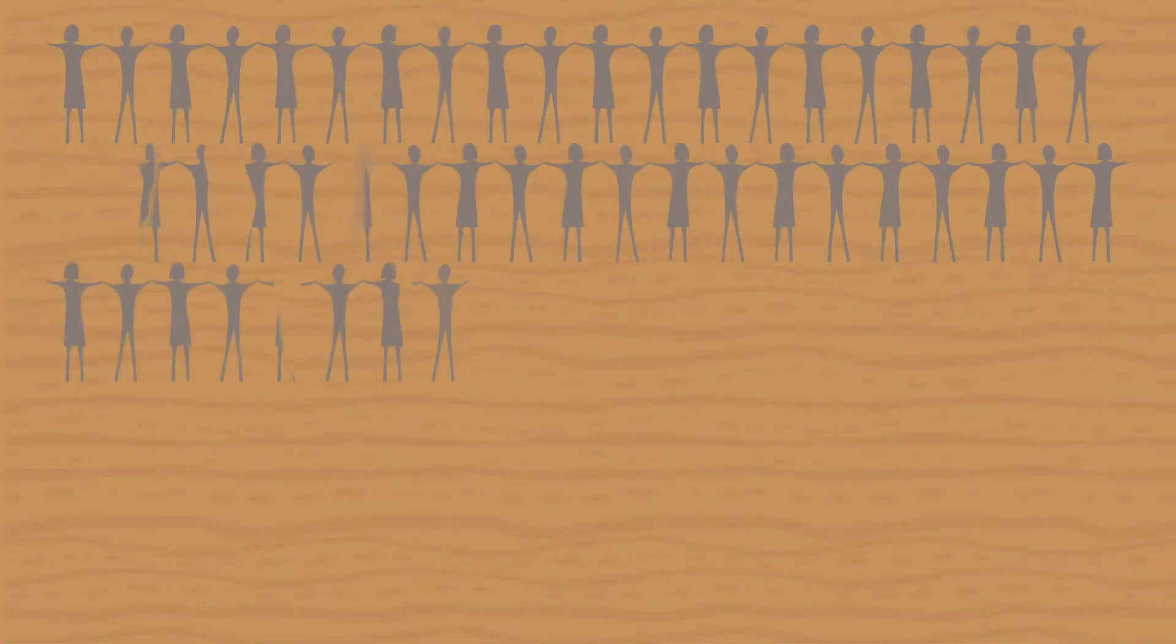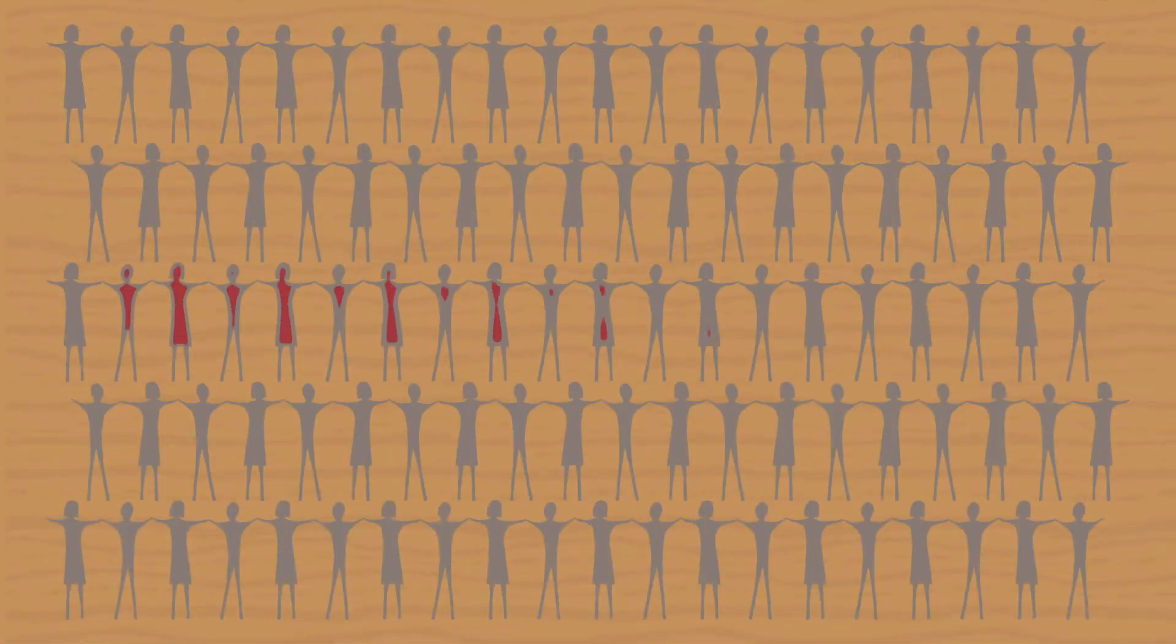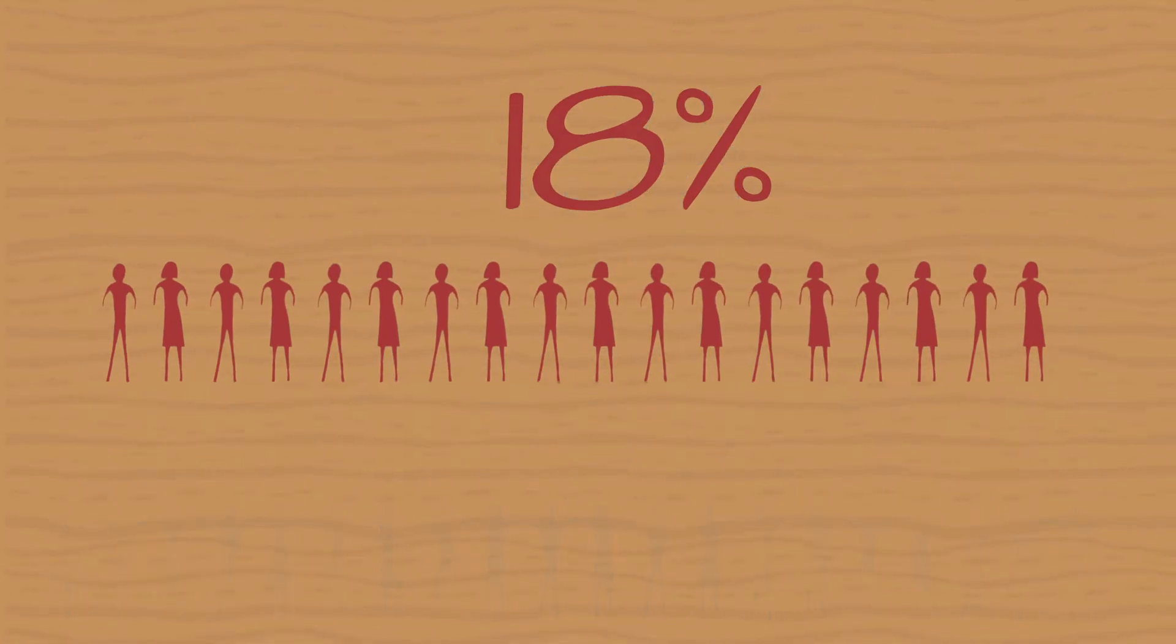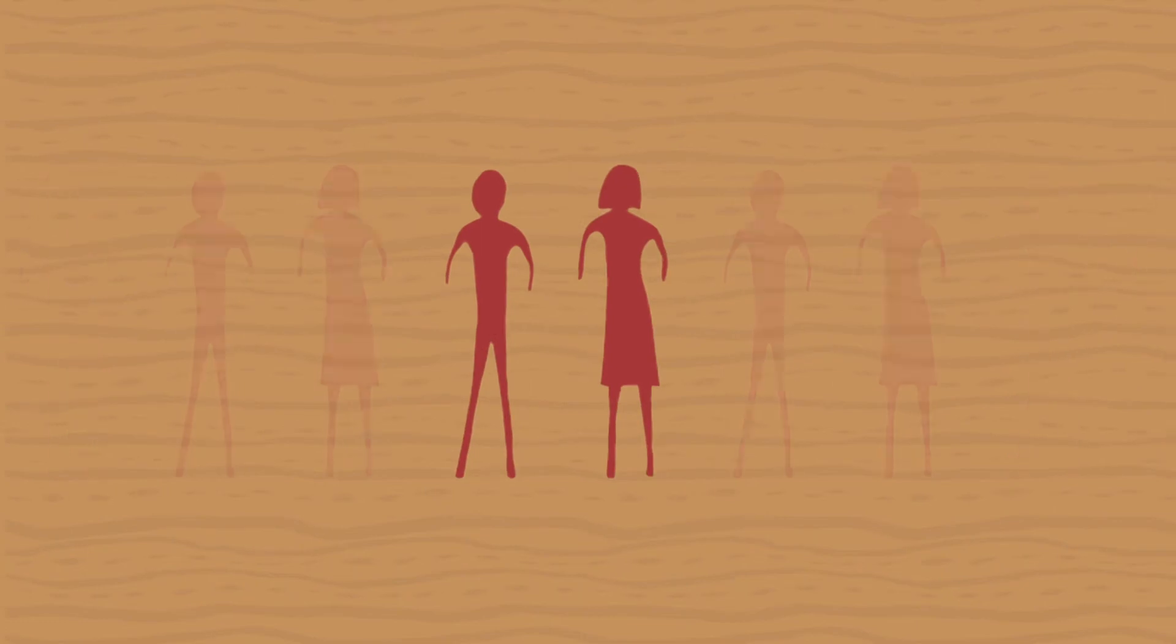In the 2012-13 National Aboriginal and Torres Strait Islander Health Measure Survey, 18% of adults had signs of chronic kidney disease.